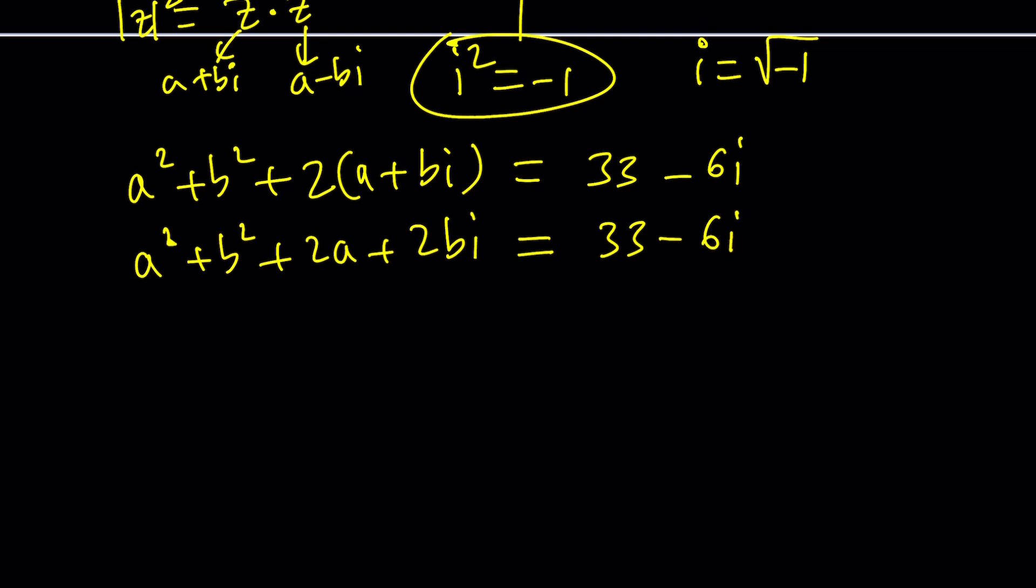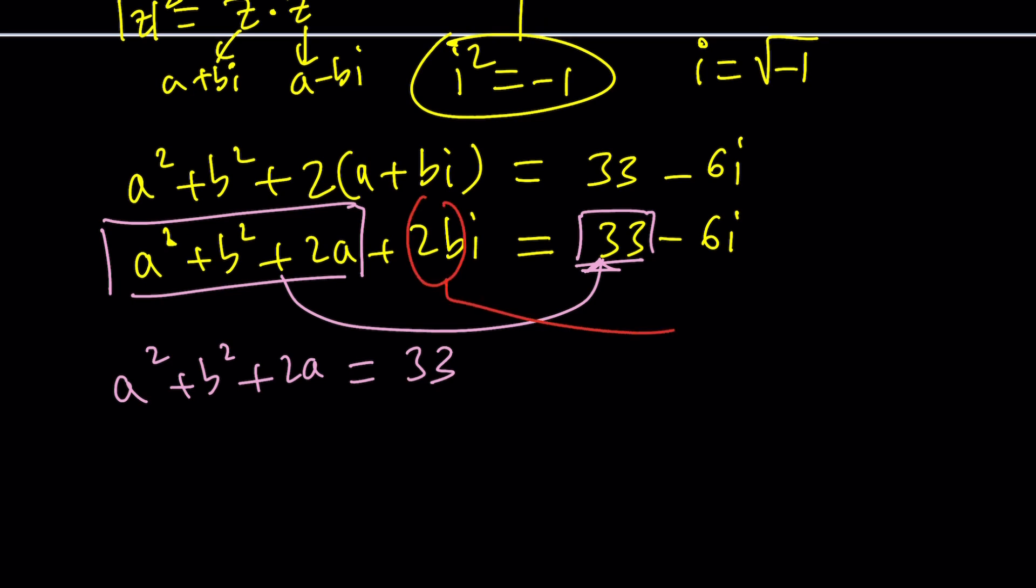Now we're going to do a one-to-one correspondence, which means real parts equal real parts, and the real part here is 33. So we're going to set this equal to 33, which is a quadratic equation with two unknowns. Uh-oh, that's not very good. But the second one is actually really cool because this expression 2bi is supposed to equal negative 6i, which means b is equal to negative 3.